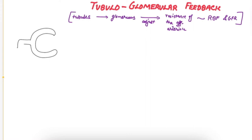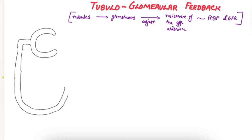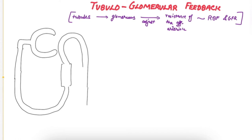This is a nephron with the renal corpuscle and the tubular part of the nephron, the thin ascending limb, the thick ascending limb. A part of the thick ascending limb called the macula densa passes between the afferent and efferent arteriole, where the thick ascending limb terminates. The macula densa is also part of the juxtaglomerular apparatus and lies between the afferent and efferent arteriole. Macula means it is a dense spot.